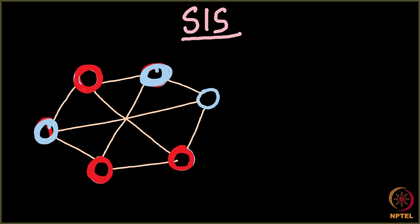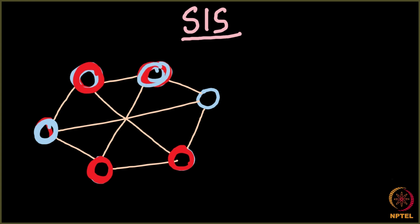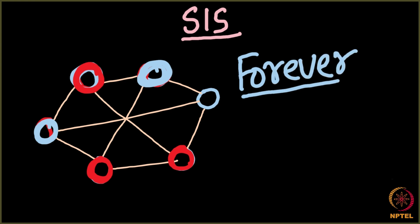You can see it can be an indefinite cycle. In the simplest form: one node infects a neighbor and becomes susceptible; then that neighbor infects the first node back and becomes susceptible. This process can keep running forever. So there is no guarantee that a SIS process will ever stop.